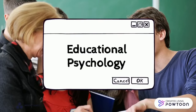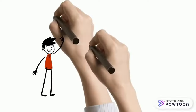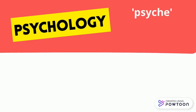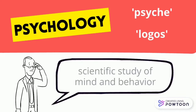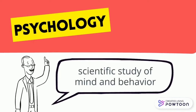Over the years, educational psychology has been an important course in teacher preparation. But what is educational psychology about? The word psychology is derived from two Greek words: psyche, meaning the mind, soul, or spirit, and logos, meaning discourse or to study. In combination, psychology is the scientific study of mind and behavior.